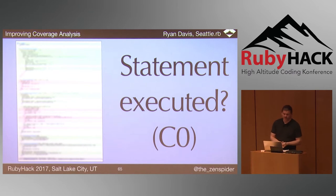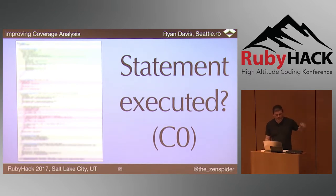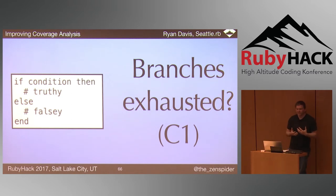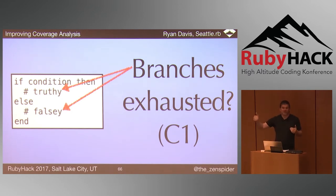C0 — what statements are executed — where statements equals a line of code, is a naive expectation. In other words, what percentage of the lines of code were executed? C1 — are branches exhausted? Were all sides of the branch expressions exercised? Branching expressions are things like if, unless, case, rescues — anywhere where your program is going to jump and skip some code.